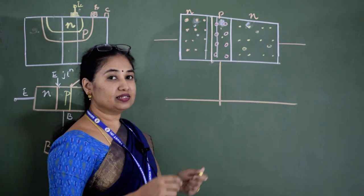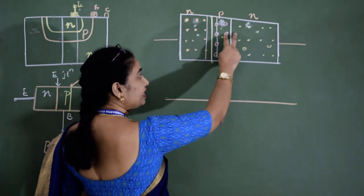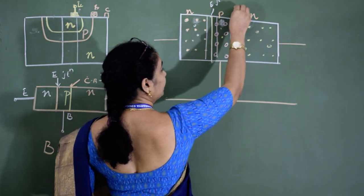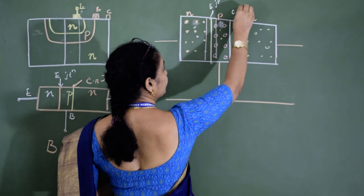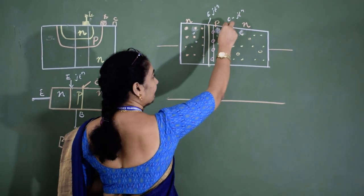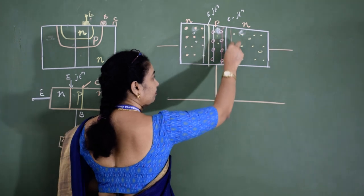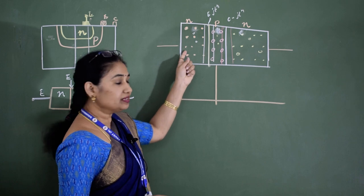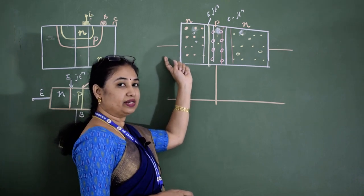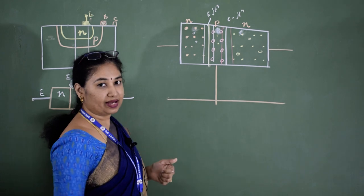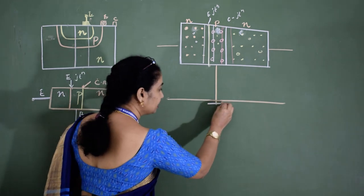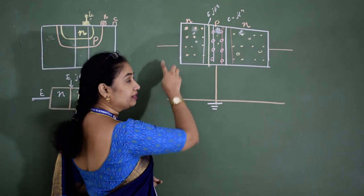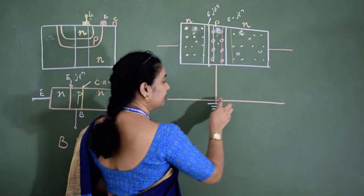When there is a depletion region, charge carriers cannot move from one side to another. Therefore, we apply biasing — an external DC power supply connected to the terminals of the transistor. We have two ports: input and output, giving four possible biasing combinations (two to the power of two equals four combinations).